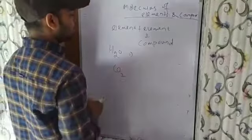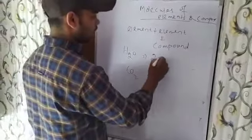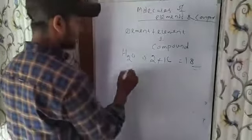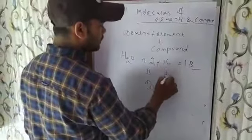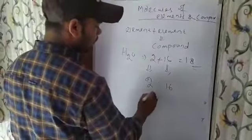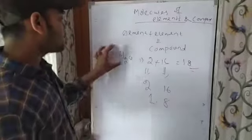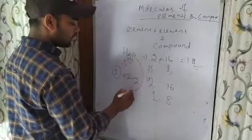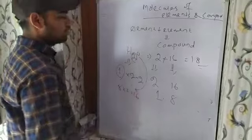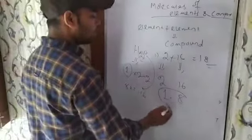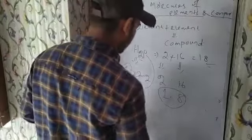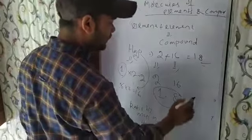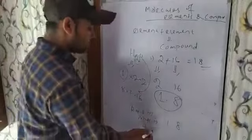In H2O, hydrogen's mass is 2 and oxygen's mass is 16. So 2 plus 16 equals 18 — the total mass is 18. The ratio of hydrogen to oxygen is 2 to 16. The simplest ratio will be 1 to 8. The mass of hydrogen is 1, multiplied by 2 gives 2. Oxygen's atomic mass is 16. So the ratio by mass in water H2O is 1 to 8.